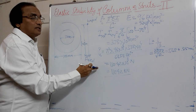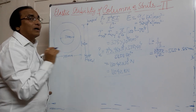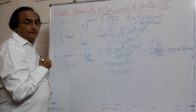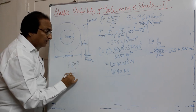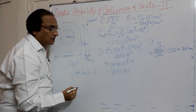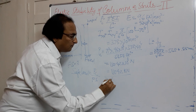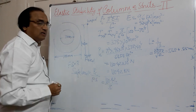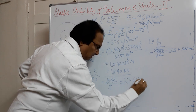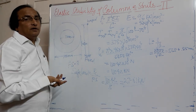When this load is applied, the column is going to fail. If we want to allow only a safe working load, we apply a factor of safety. With factor of safety = 3, the safe load = critical load / factor of safety = 110.42 / 3 = 27.61 kN. This is the safe load we can allow on the column so that it does not fail.